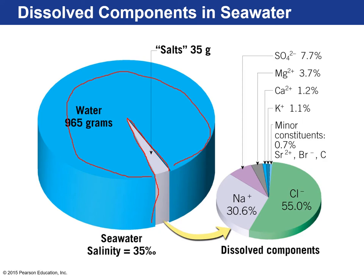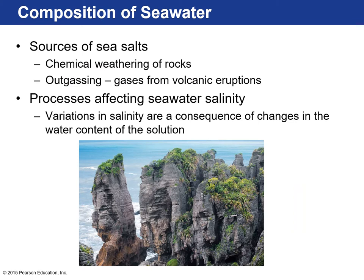What that consists of is mostly chloride. Chloride is the most abundant ion in seawater at about 55 percent. The next most abundant is sodium, and those two together form an ionic bond creating NaCl, which is salt. Other major dissolved solids in seawater are sulfate, magnesium, calcium, and potassium, along with some other minor constituents.